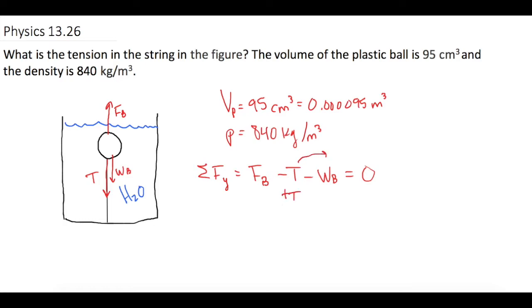So we add tension to both sides. So now T is equal to the buoyant force minus the weight of the ball. Plugging in the variables for tension and weight, we get T is equal to rho times G times the volume. And this is the volume of the liquid displaced, which will be the same as the volume of the ball, minus the rho times G times the volume of the ball.